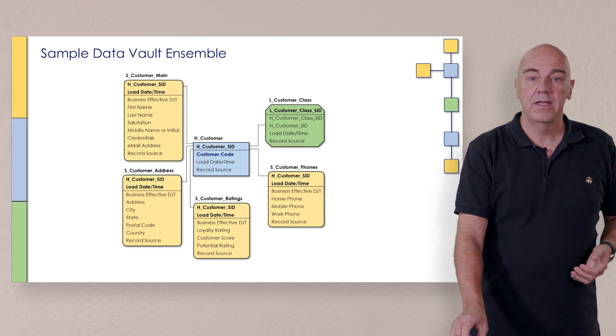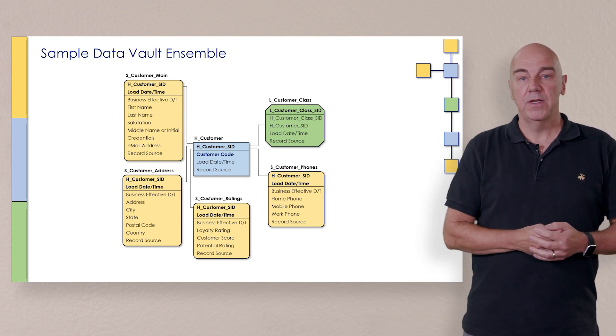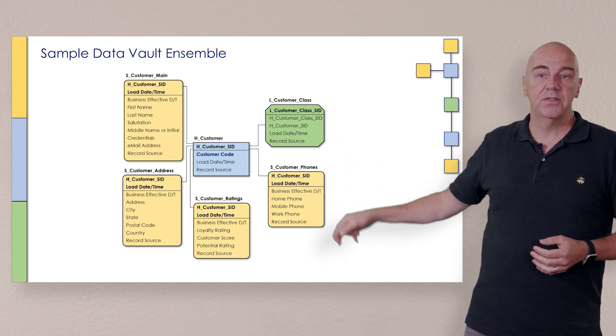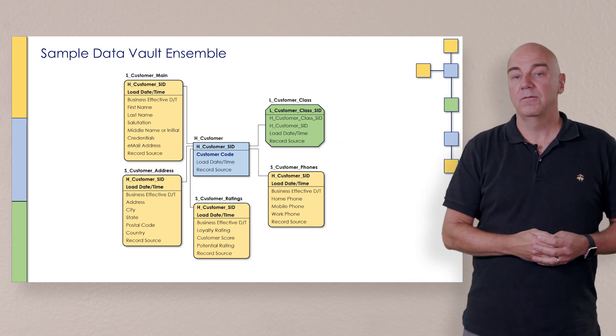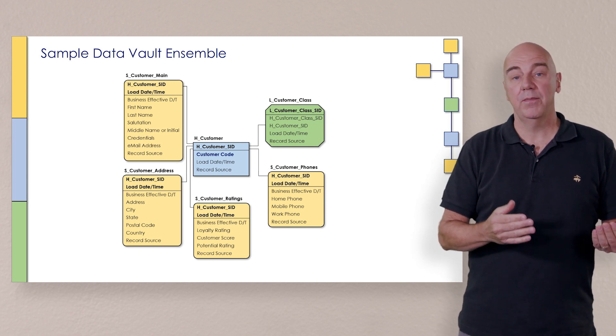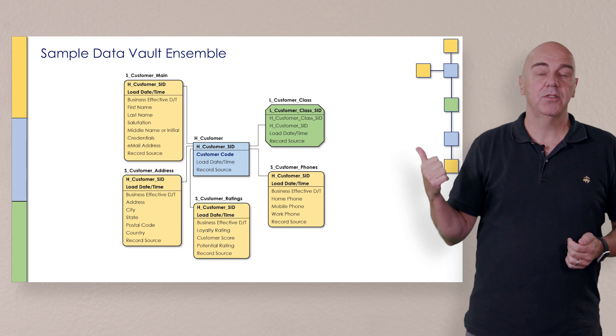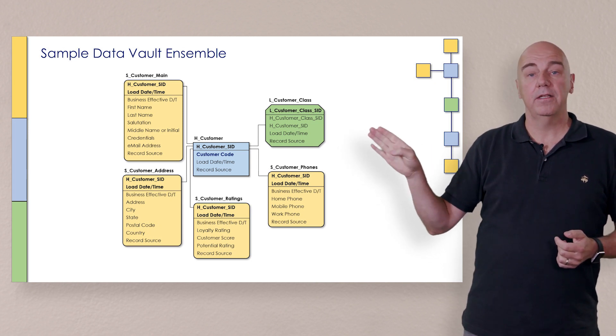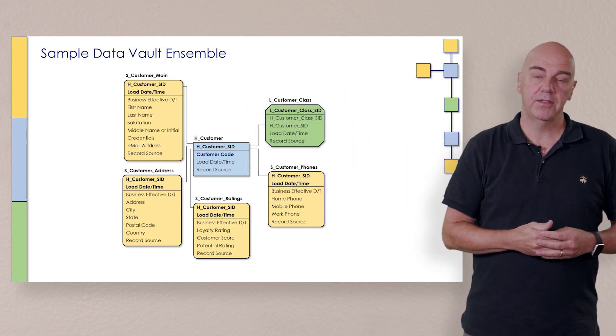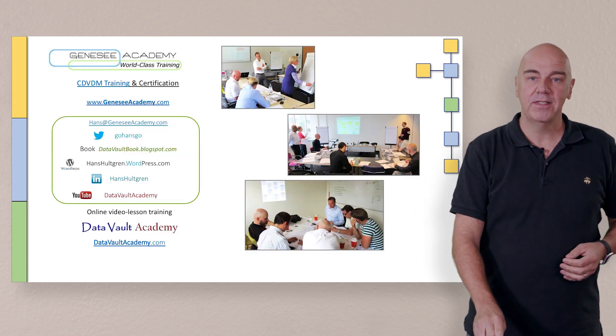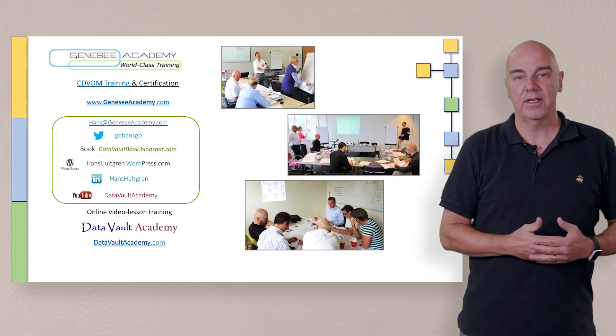So let's take a look at the model again. Here is an ensemble just for customer. And you'll notice that in the hub it's just the business key, in the satellites just context to describe that business key, and then the link is in this case just a relationship, a handshake to something else, which in this case happens to be customer class. So I hope that's helpful and we'll see you in the next lesson.